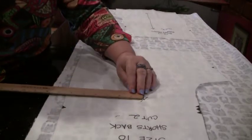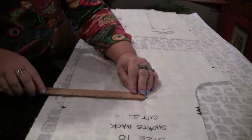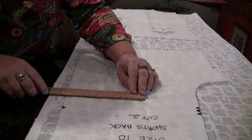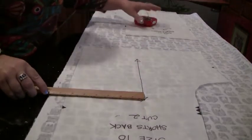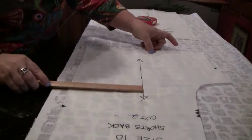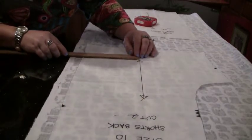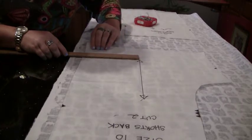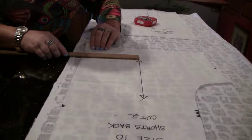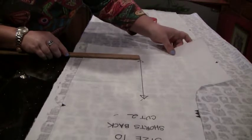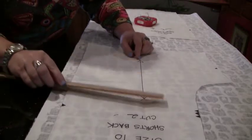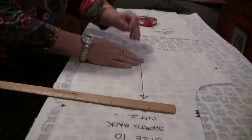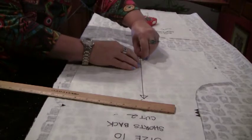Measure from the arrow to the edge of the selvage. That is seven and seven eighths. So now I'm going to come down, and this arrow needs to be seven and seven eighths also. I am about an eighth of an inch off, so I'm going to move my pattern until it is the same. Once it's the same, make sure that you smooth it out and pin it down.